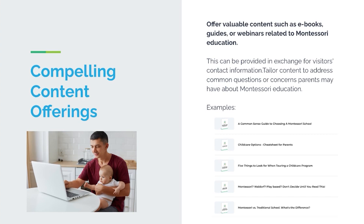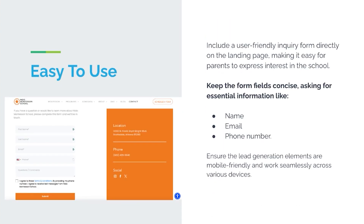Think about what they would actually care to download. Lead generators on your website should also be easy to use — don't have a long form with every question imaginable. Use a user-friendly inquiry form, either on a landing page or a contact page, and make it easy for parents to express their interest. Keep it short and sweet: just first name, email, and phone number. Ensure it works across devices — mobile-friendly, laptop, and tablet — because you never know how parents are accessing your website.